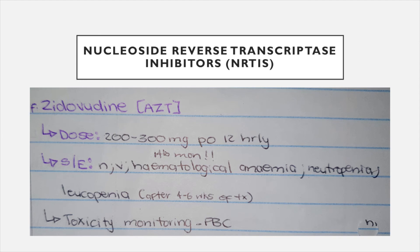The last NRTI is zidovudine (ZDV or AZT). The dosage is 200 to 300 milligrams orally 12-hourly. Side effects include nausea, vomiting, and hematological issues, so you need to constantly monitor the FBC if a patient is on zidovudine. It causes macrocytic anemia, neutropenia — a decrease in neutrophils (white blood cells) — and leukopenia after four to six weeks of treatment. If it's an immunocompromised patient, you want to avoid this medication. Patients on HIV medication will constantly have full blood counts to check for drug levels and toxicity.